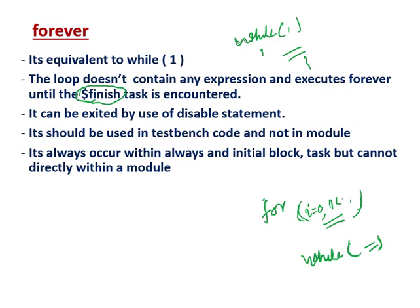What you have to remember is: this loop doesn't contain any expression, and it executes forever until the forever loop encounters a $finish task. It can be exited by the use of a disable statement - if you include a disable statement, your forever loop can exit from that particular block. It should be used in testbench code and not in a module. Normally this forever is not used while designing digital logic, so we don't write forever inside a module.